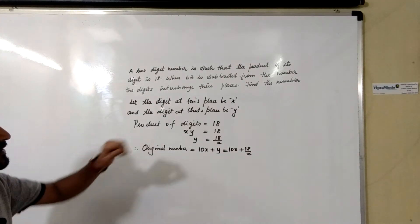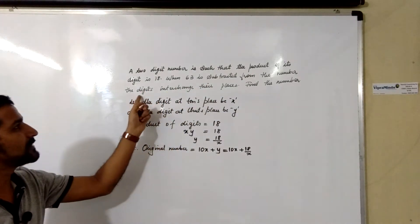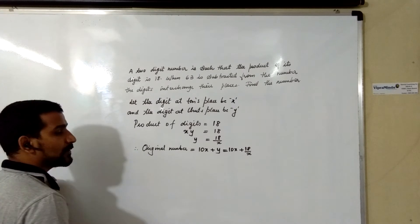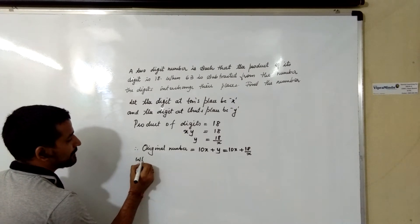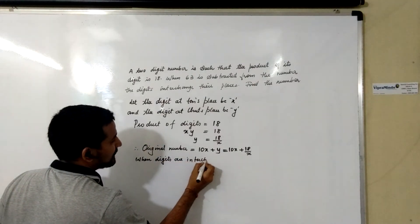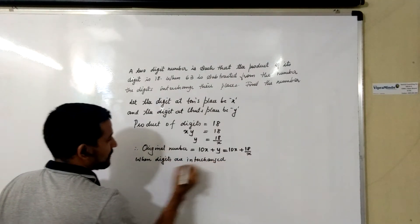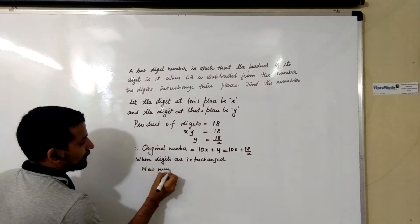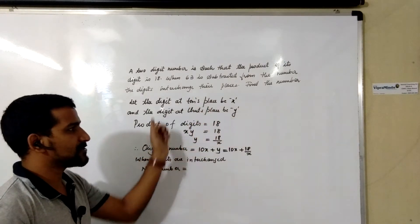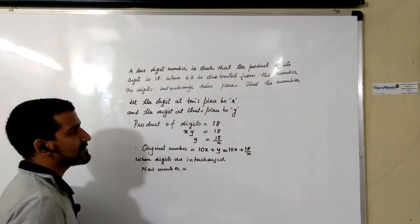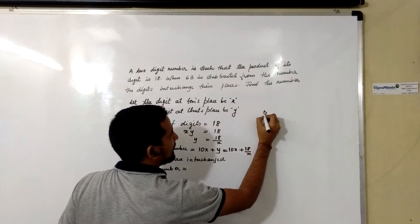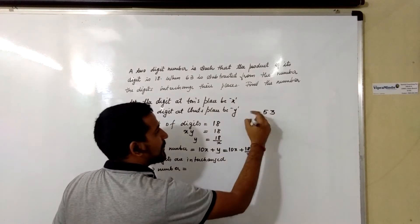What is given here is that if 63 is subtracted from the number, the digits are interchanged. When the digits are interchanged, the new number is formed. For example, if the original number is 53, it becomes 35 — that is, earlier it was 5×10 + 3×1, and now it becomes 3×10 + 5×1.